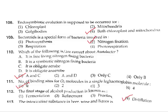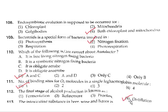Question 111: The number of binding sites for oxygen molecules in a single-legged hemoglobin molecule is one binding site. Correct answer is option 1. Question 112: The final stage of alcohol production is called distillation.